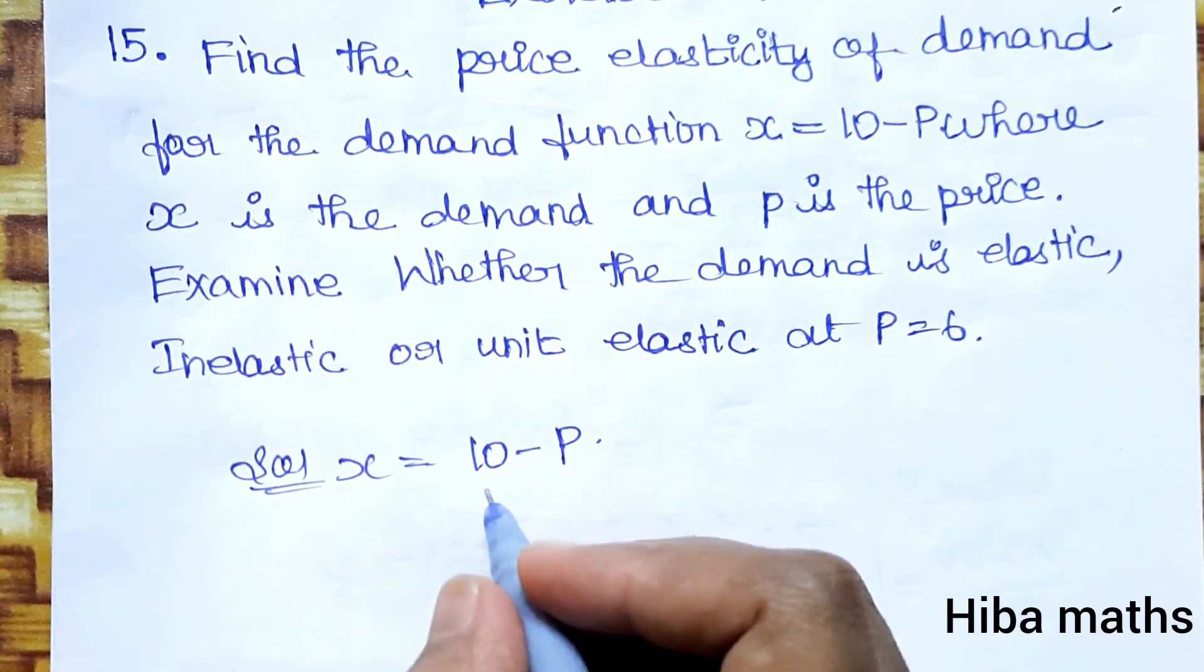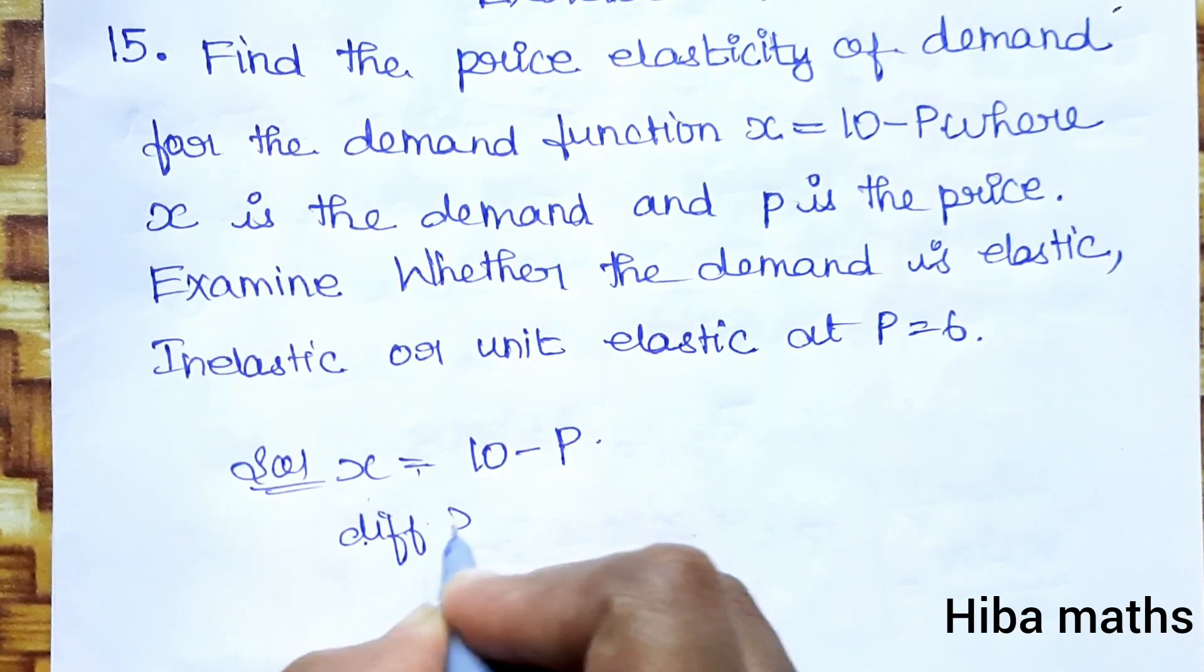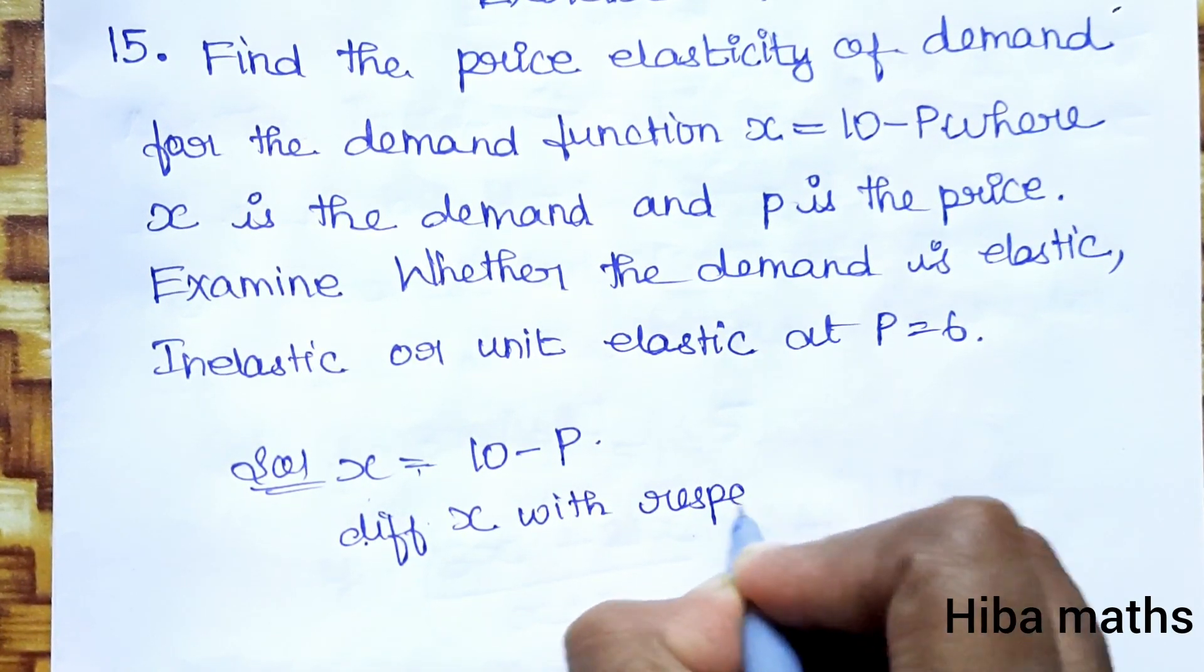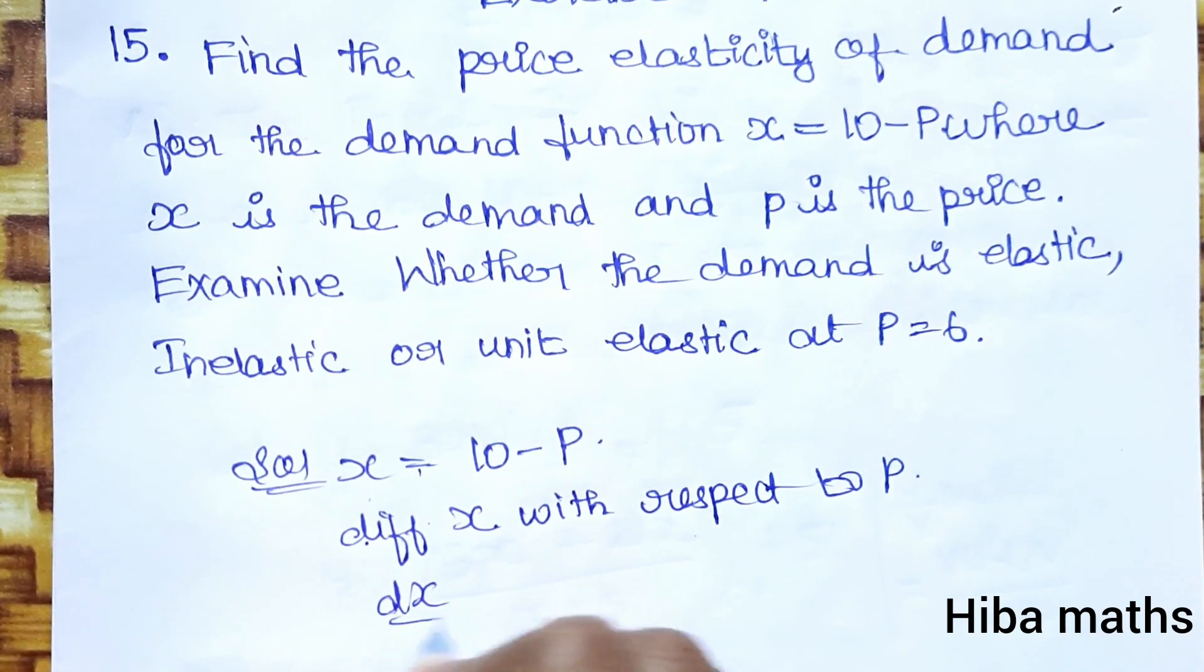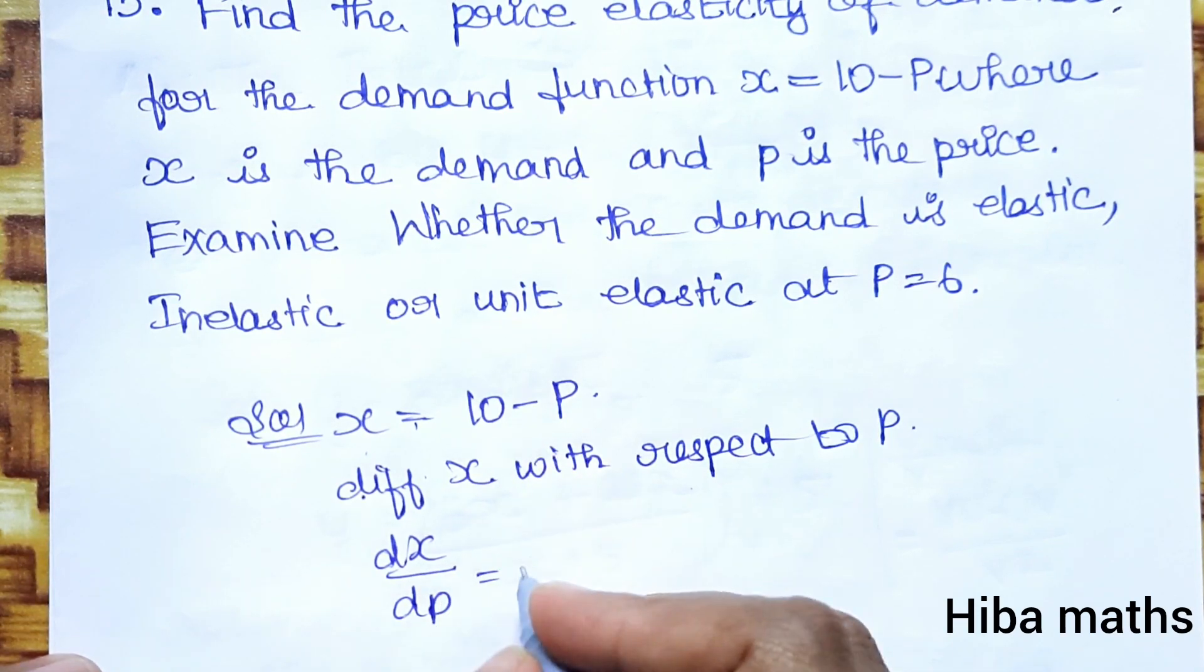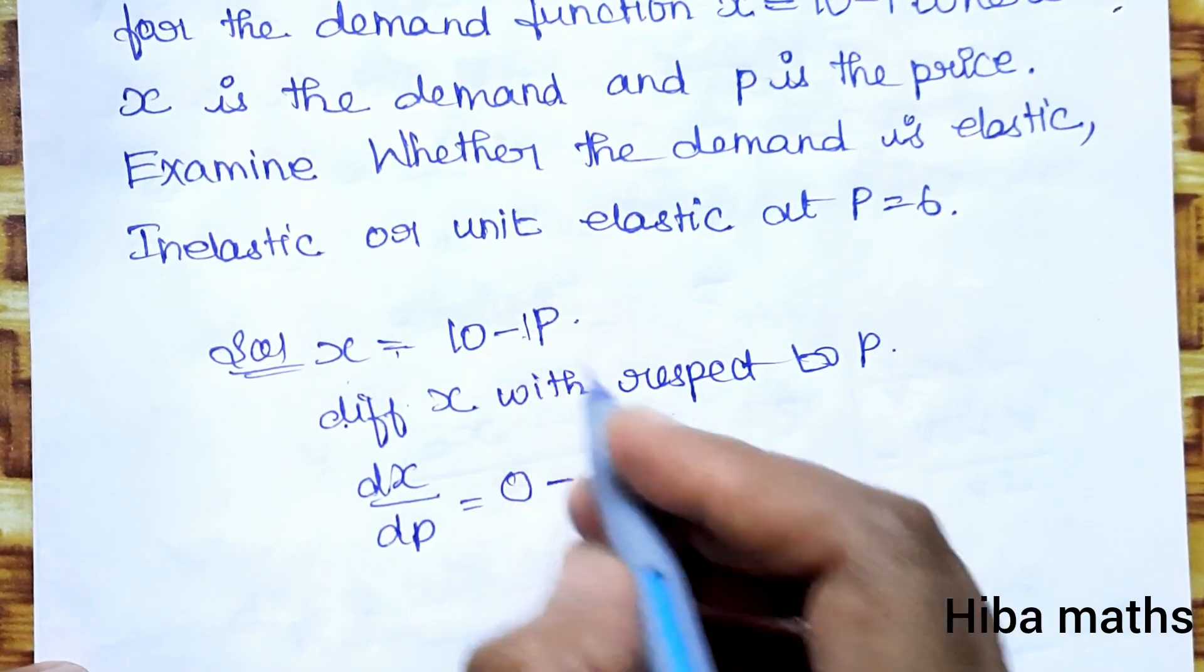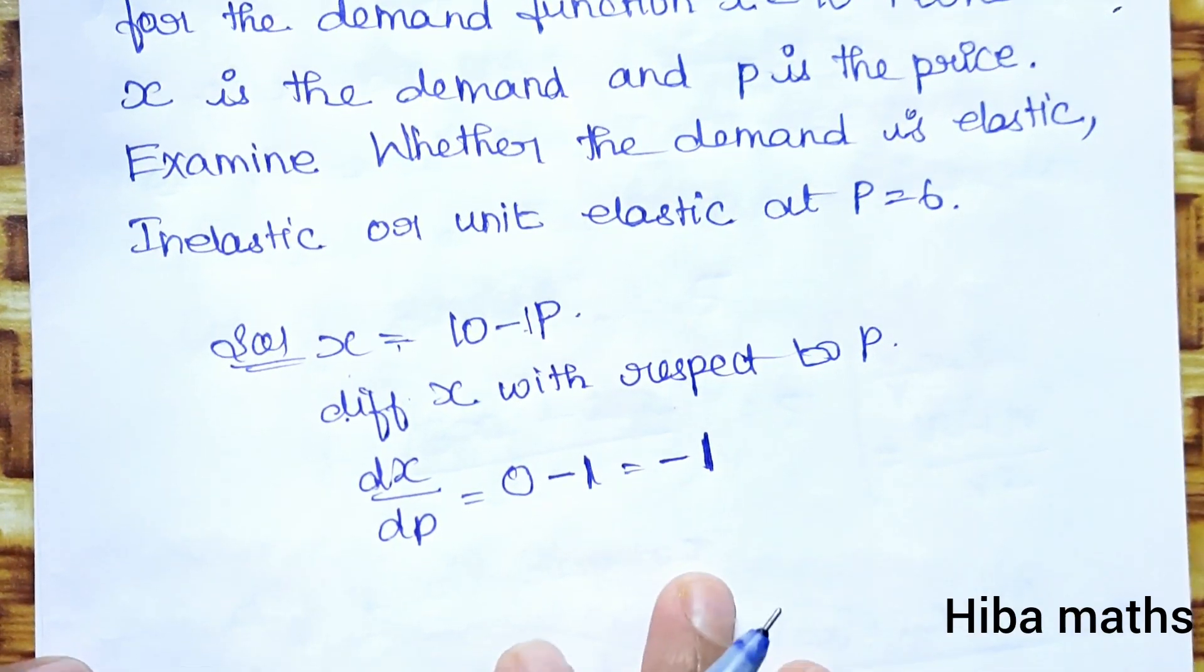η_d involves dx/dP, so differentiating X with respect to P: the derivative of 10 is 0, and the derivative of -P is -1. So dx/dP = -1.